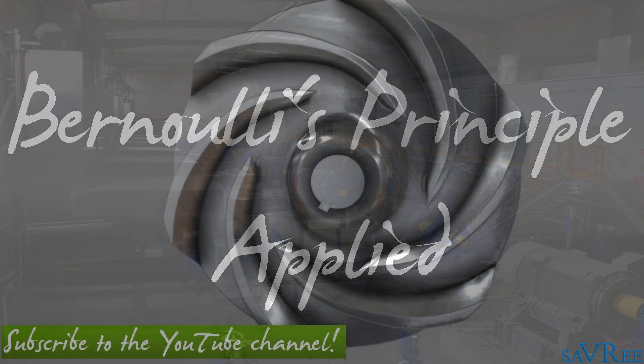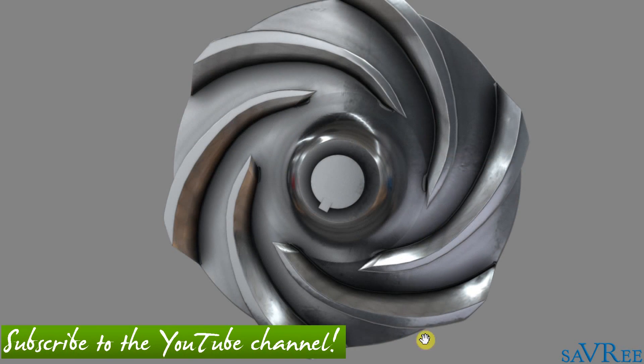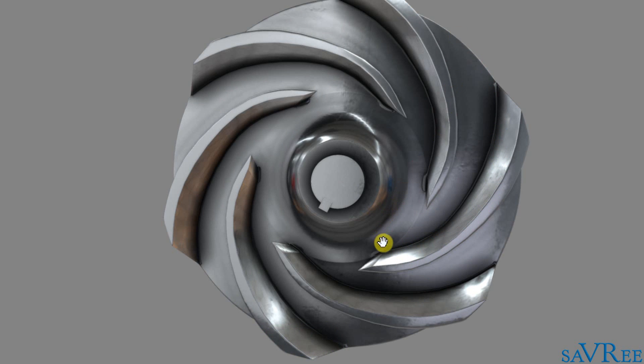So here is our impeller again. And we can see that the flow path area increases as the flow flows out radially away from the center of the impeller. And we know now that this increase in flow path is going to cause a reduction in velocity and an increase in pressure. And that is essentially how a centrifugal pump works.